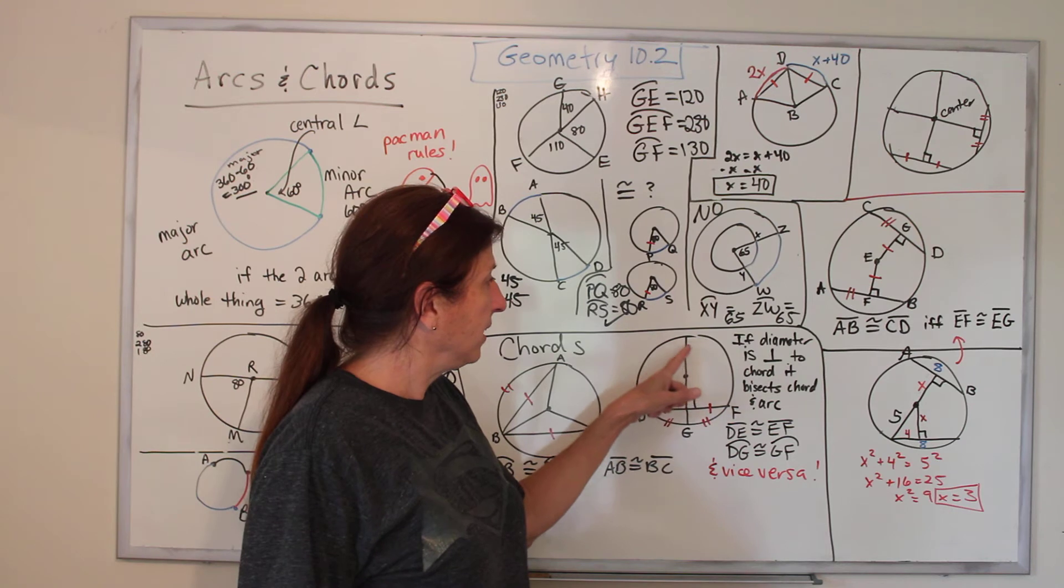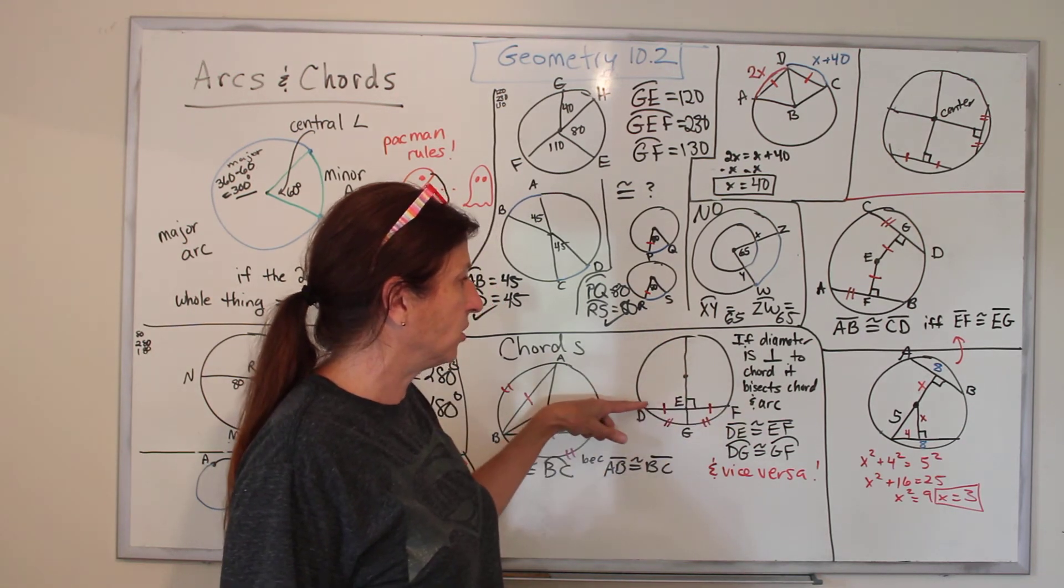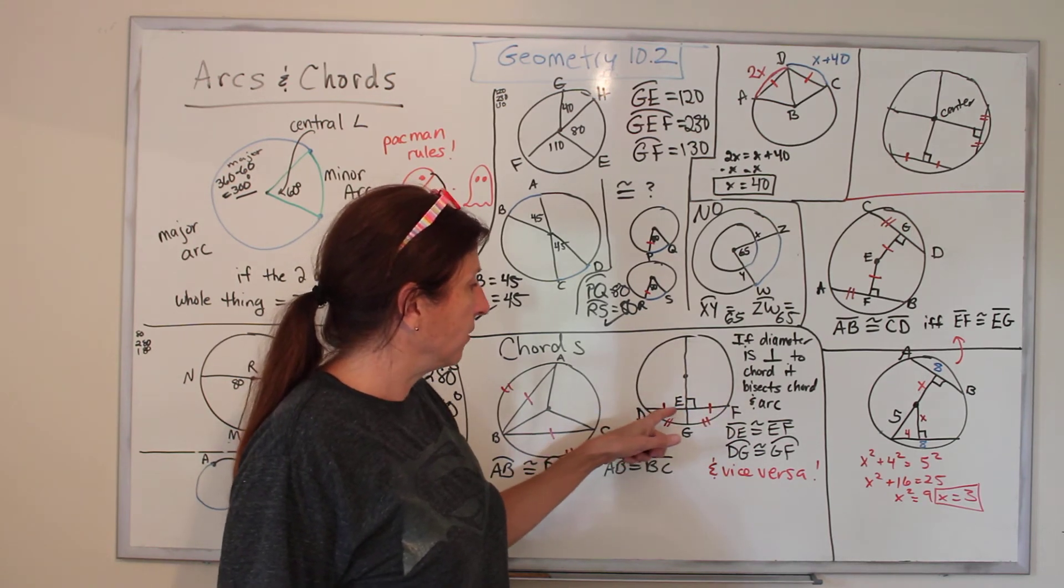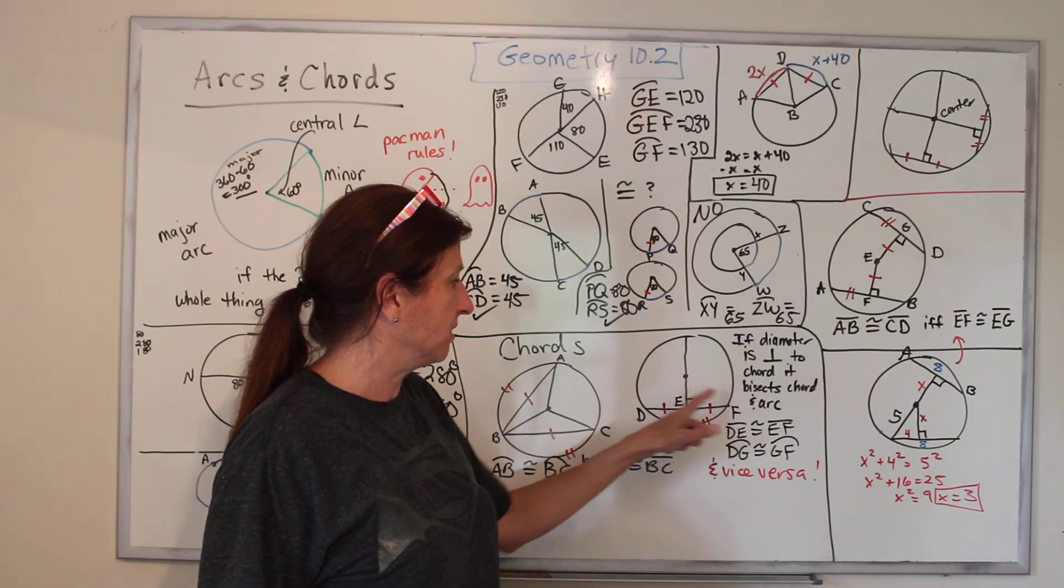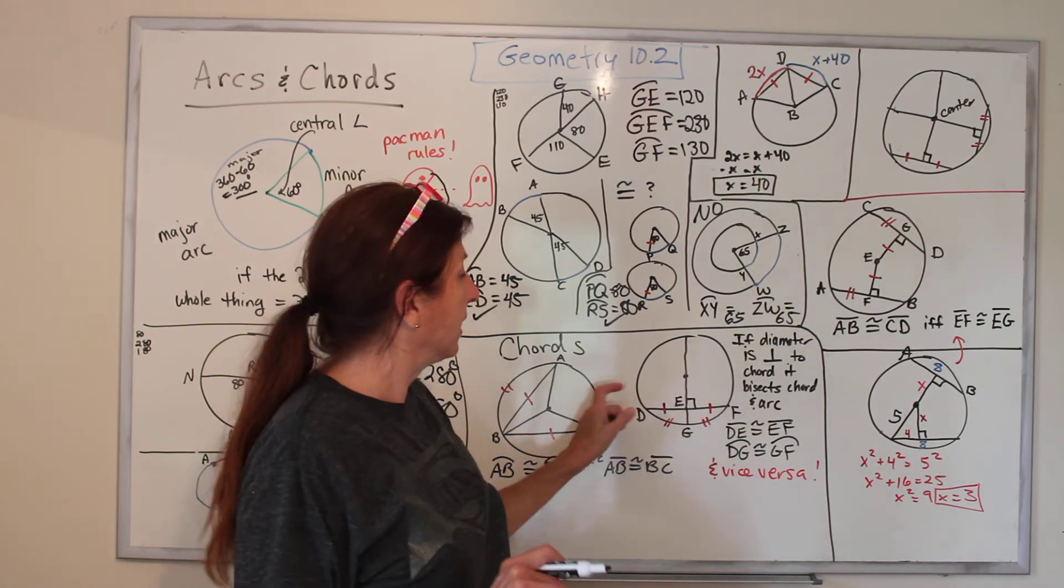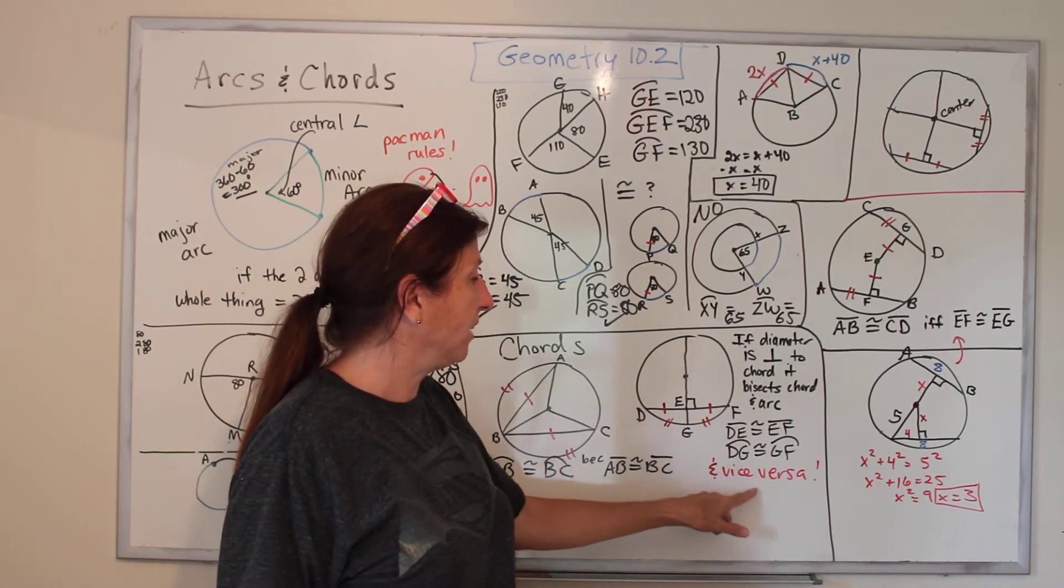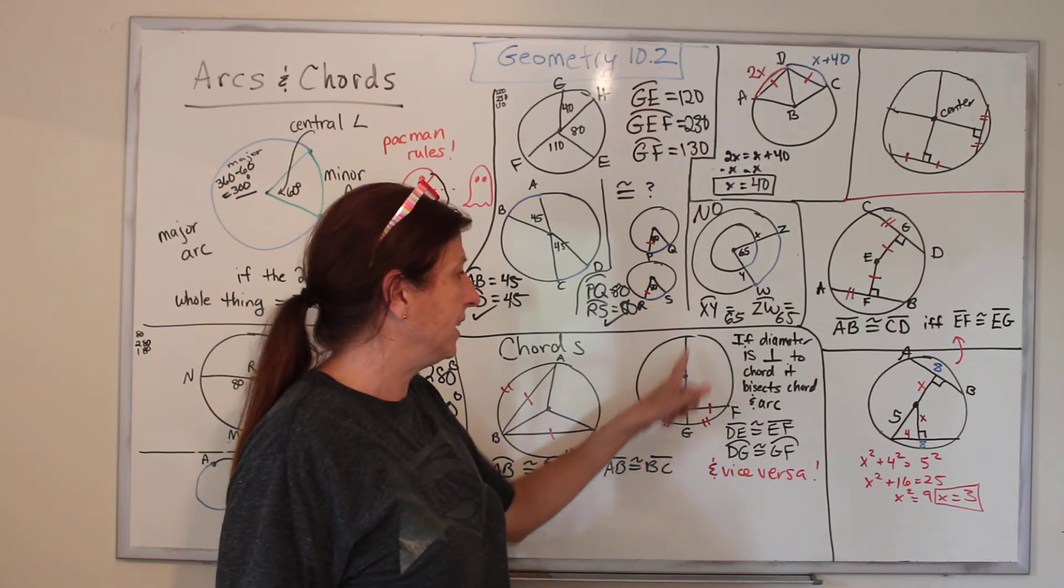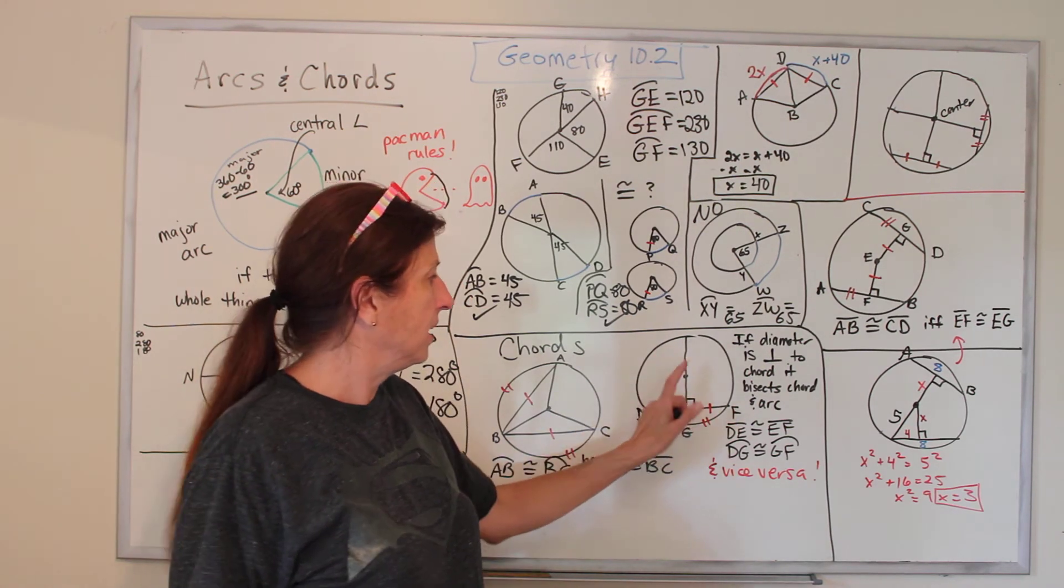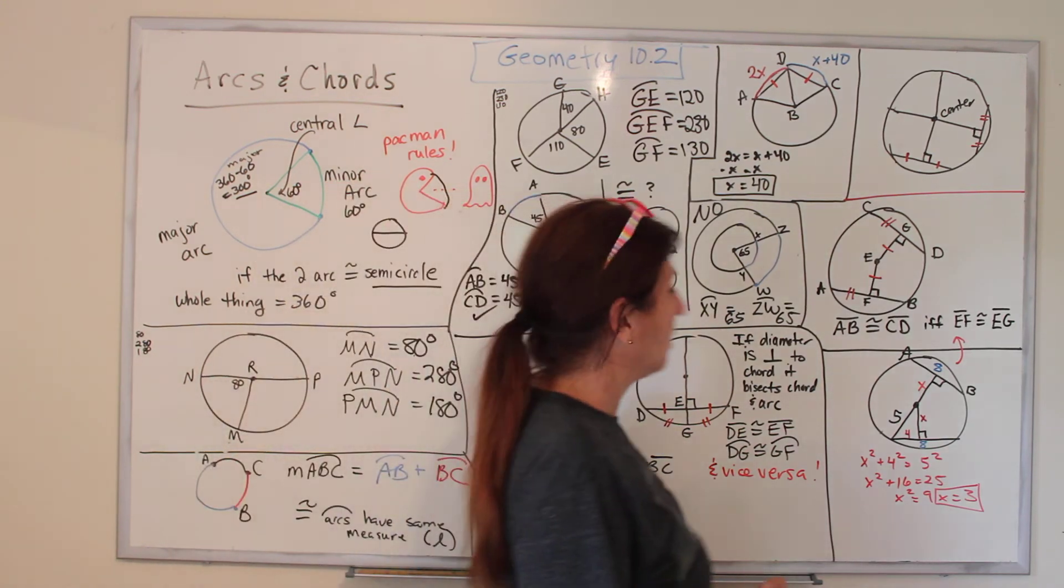Here's another one. If a diameter going all the way across is perpendicular to a chord, it bisects the chord and the arc. So the line DF is cut in half, and those are equal. The arc DGF is cut in half, and those are equal. And vice versa. If these are all even, we know that line is bisecting, and it is a right angle, that it is perpendicular.